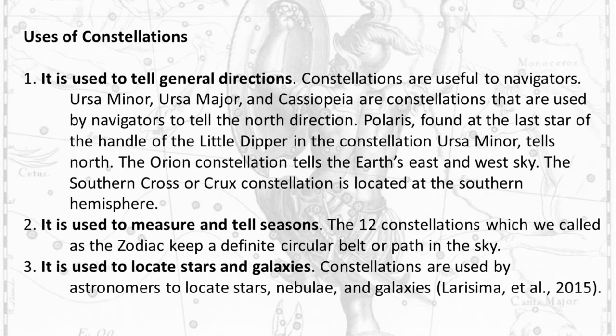Uses of Constellations. 1. It is used to tell general directions. Constellations are useful to navigators. Ursa Minor, Ursa Major, and Cassiopeia are constellations used by navigators to tell the north direction. Polaris, found at the last star of the handle of the Little Dipper in the constellation Ursa Minor, tells north. The Orion constellation tells the Earth's east and west sky. The Southern Cross or Crux constellation is located at the southern hemisphere. 2. It is used to measure and tell seasons. The twelve constellations of the zodiac keep a definite circular belt or path in the sky. 3. It is used to locate stars and galaxies. Constellations are used by astronomers to locate stars, nebulae, and galaxies.